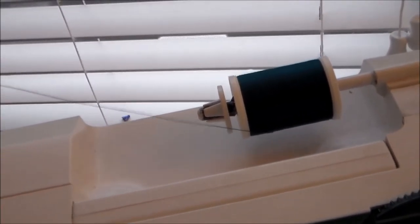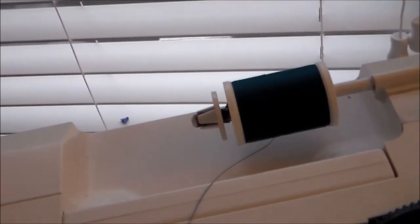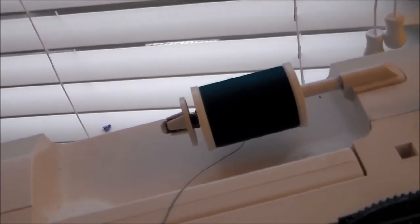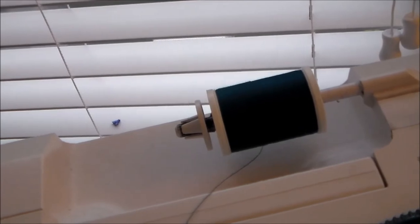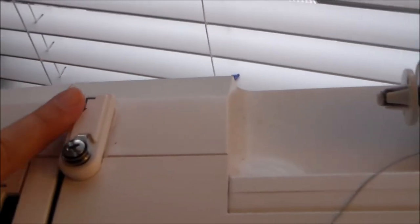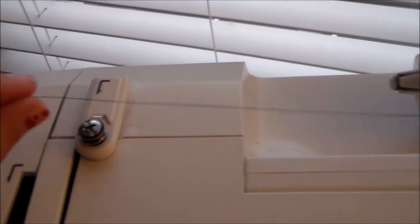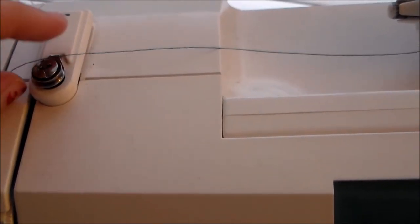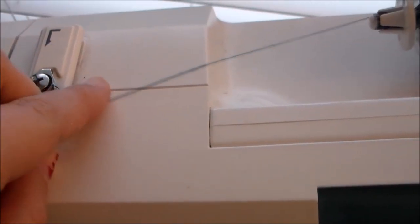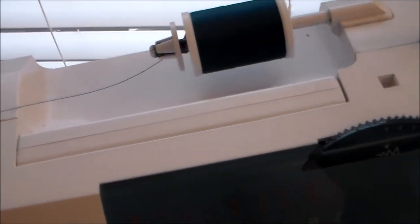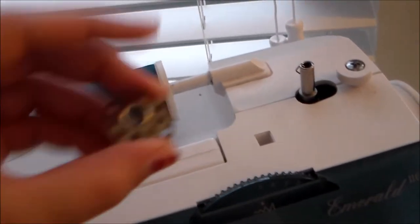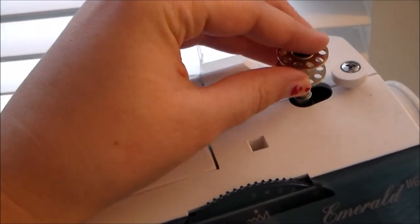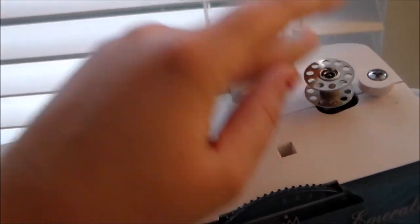Then you're going to take your thread. It tends to be a bit different for every machine so you want to consult your manual, but there are also some arrows on your machine as well. So for this one we're going to take the thread and we're going to bring it around this little piece right here. It's a bit difficult to do one-handed. Then we're going to take the bobbin and slide it onto this little piece here.